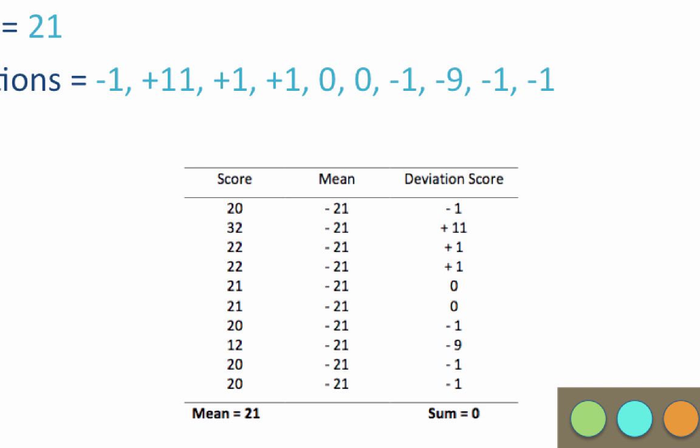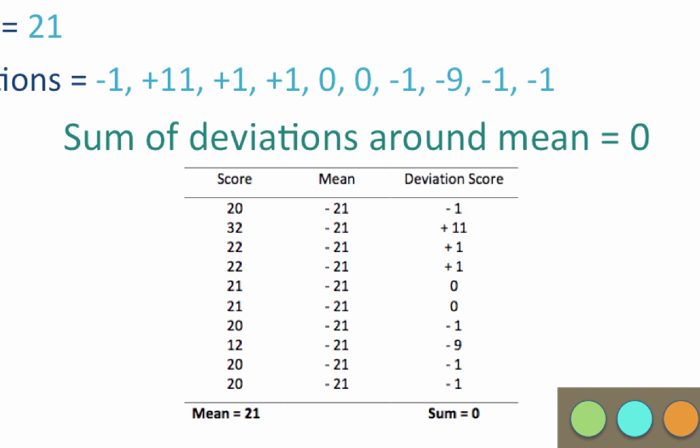It is at this point that we run into a problem. The sum of the deviations around the mean equals 0. When we divide by n, we get a variability of 0, and we know that can't be right.